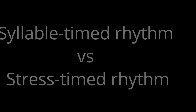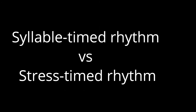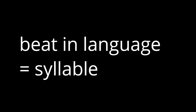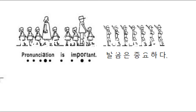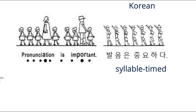Syllable-timed rhythm vs. stress-timed rhythm. In a language, syllables can be viewed as beats. Some languages exhibit regularity in the timing of successive syllables. Korean, for example, is a syllable-timed language, meaning that each syllable occurs at a regular interval.